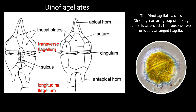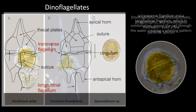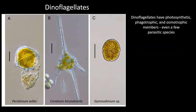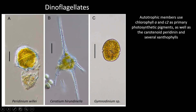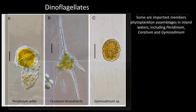The dinoflagellates, class Dinophyceae, are a group of mostly unicellular protists that possess two uniquely arranged flagella — a transverse flagellum and a longitudinal flagellum — which in combination propel the cell through the water creating a whirling pattern. Dinoflagellates have photosynthetic, phagotrophic, and osmotrophic members, and even a few parasitic species. Autotrophic members use chlorophyll A and C2 as primary photosynthetic pigments, as well as the carotenoid peridinin and several xanthophylls. Some are important members of phytoplankton assemblages in inland waters, including Peridinium, Ceratium, and Gymnodinium.